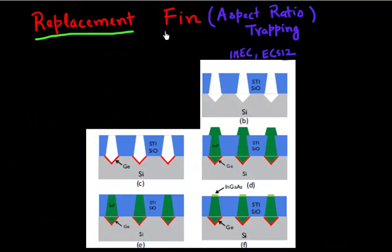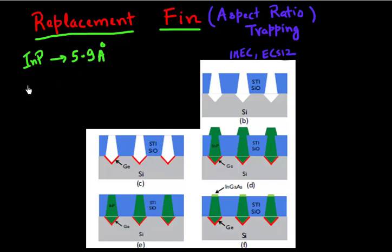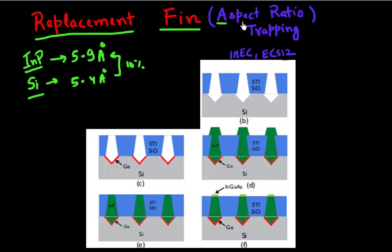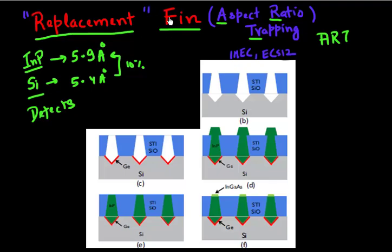Shown here is one example of this replacement fin approach being used to make fins of different channel materials such as germanium or III-V. In this case, they are making a fin of indium phosphide which has a lattice constant of 5.9 angstroms, grown on a silicon substrate which has a lattice constant of 5.4 angstroms. So there is a 10% lattice mismatch between the two, and there will of course be defects created. They want to use this approach called aspect ratio trapping, or ART, in this replacement fin flow to capture these defects.